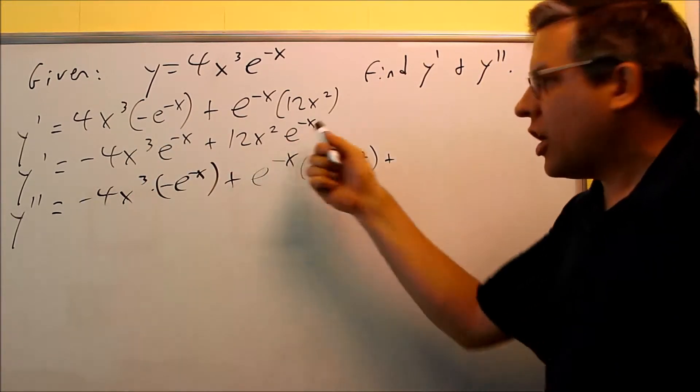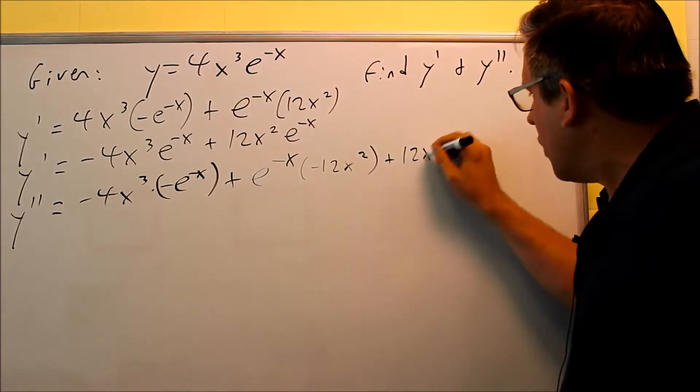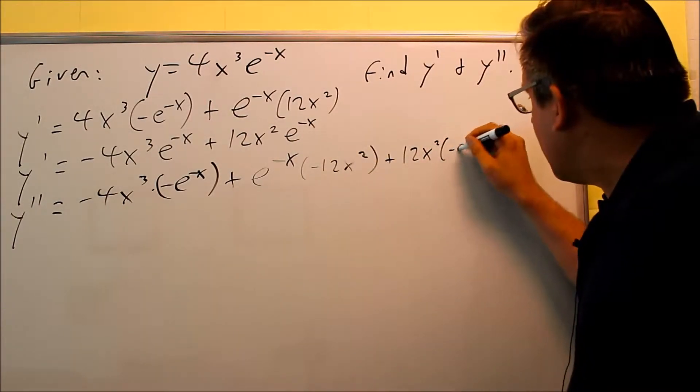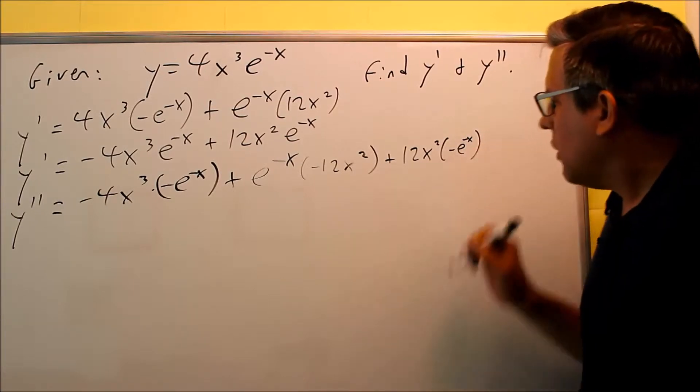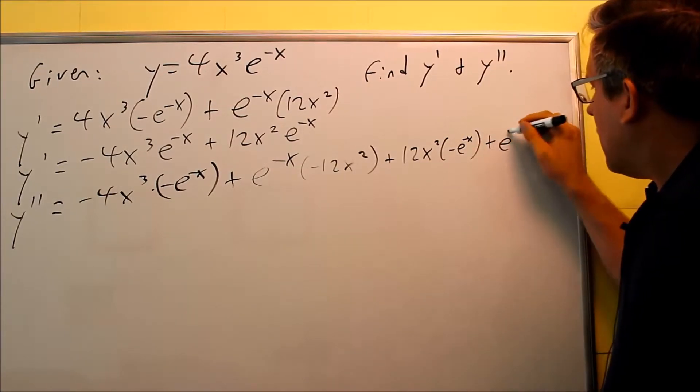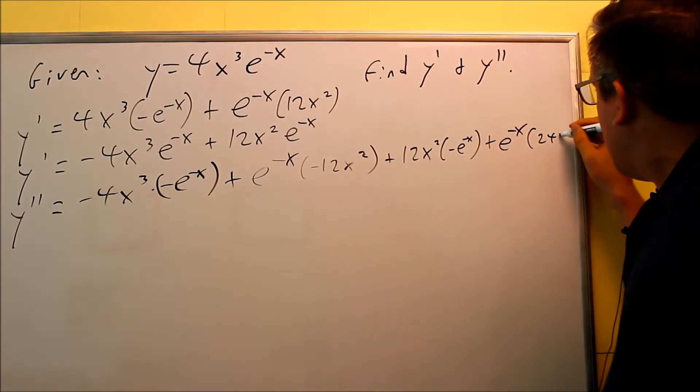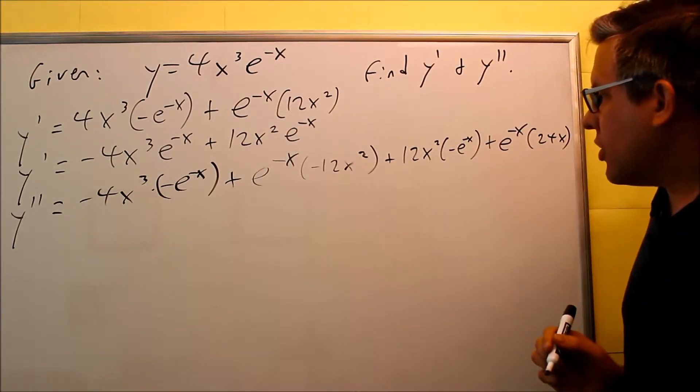Then we're going to do product rule again for this one. The first term, 12x², derivative of e^(-x) is once again -e^(-x), plus the second thing, e^(-x), the derivative of the first, two comes down. It's going to be 24x to the first power, and then that's it.